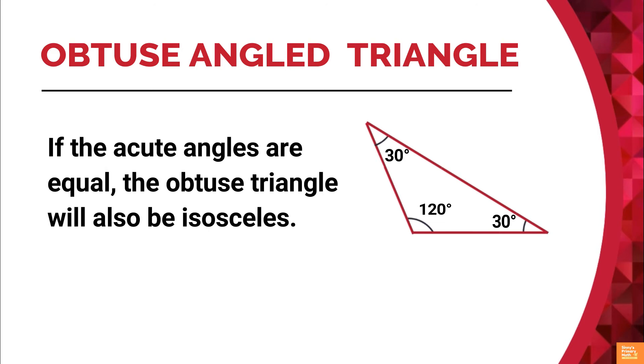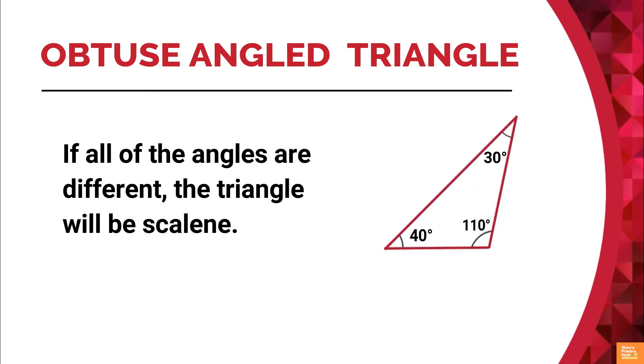If the acute angles are equal, the obtuse triangle will be isosceles. Yes, we can call it obtuse angle isosceles triangle. If all of the angles are different, the triangle will be scalene, that is obtuse angle scalene triangle.